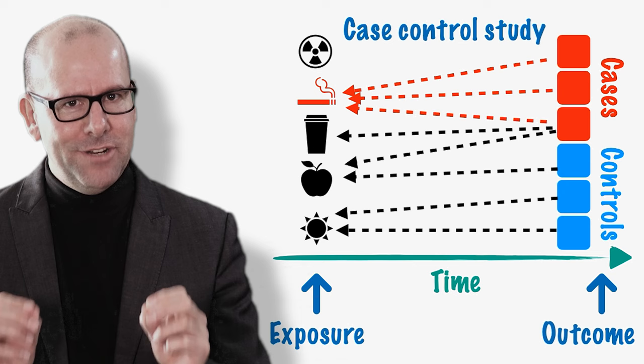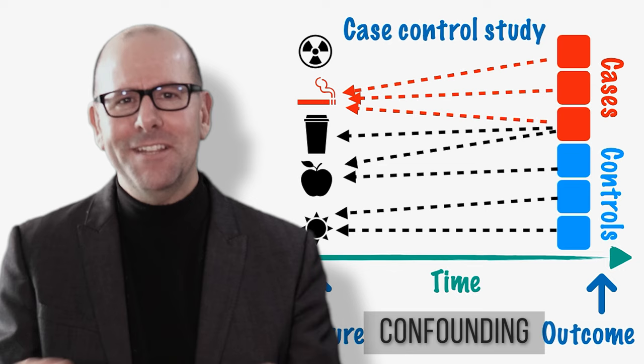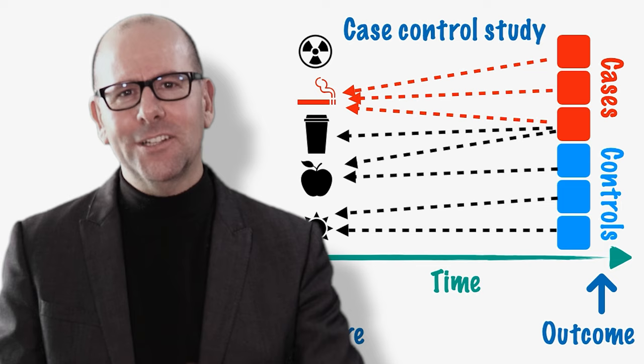The reason correlation doesn't equal causation is because of confounding. Confounding is the biggest weakness when it comes to these sorts of studies — it's an alternative explanation for what seems to be a causative relationship between an exposure and an outcome.